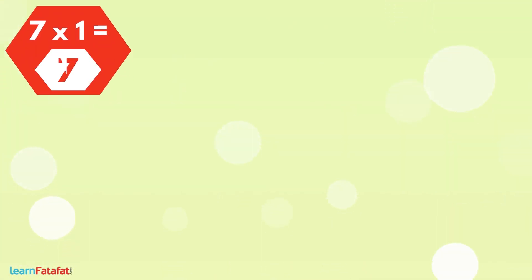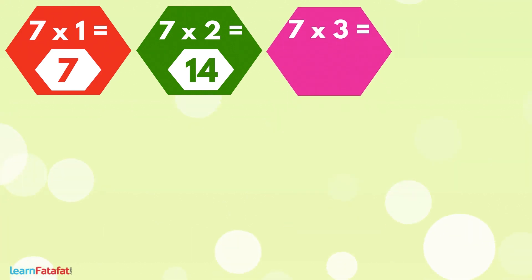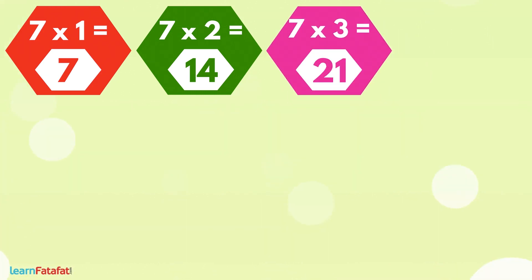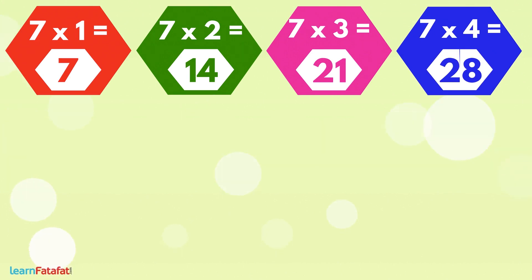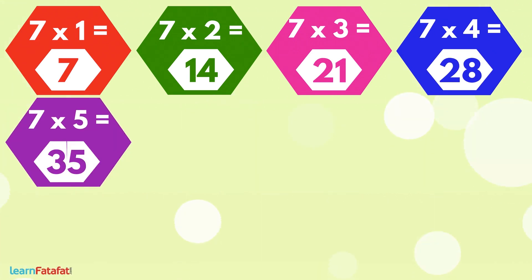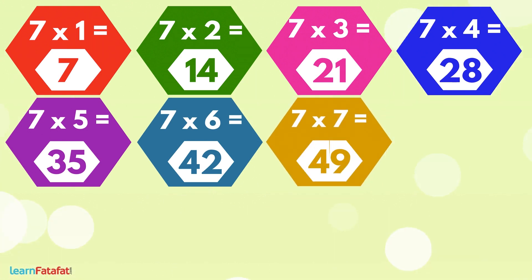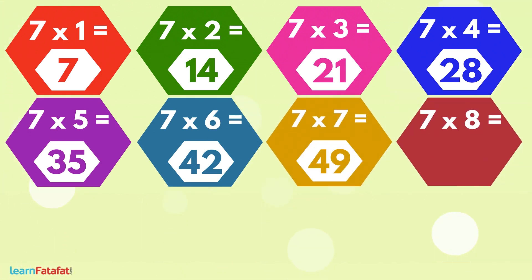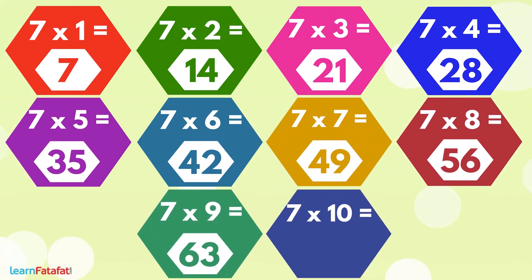7 1s are 7. 7 2s are 14. 7 3s are 21. 7 4s are 28. 7 5s are 35. 7 6s are 42. 7 7s are 49. 7 8s are 56. 7 9s are 63. 7 10s are 70.